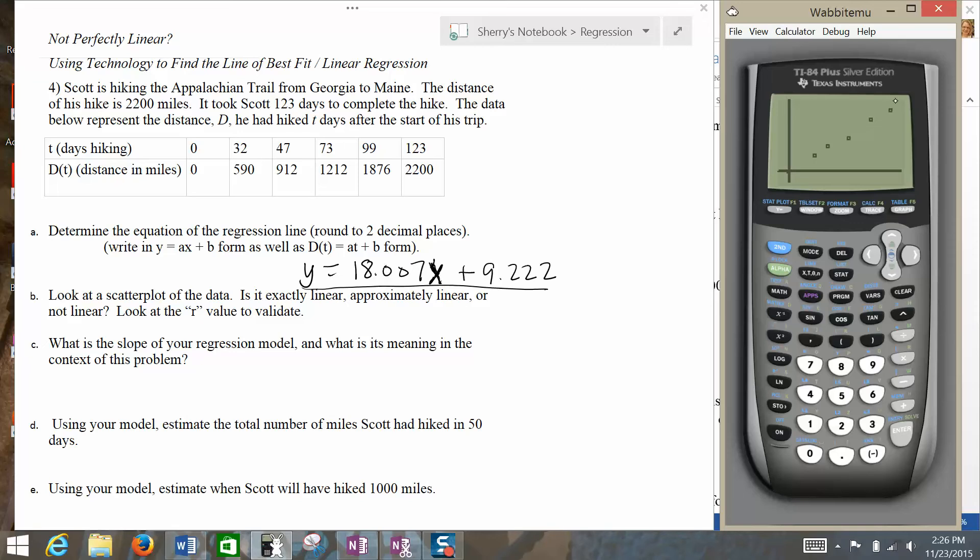There they are. And so now you can see all of our points here. Looking at the picture, I would say that looks pretty darn close to a line. So based on looking at my scatter plot, not exactly linear, but definitely qualifies here as approximately linear.